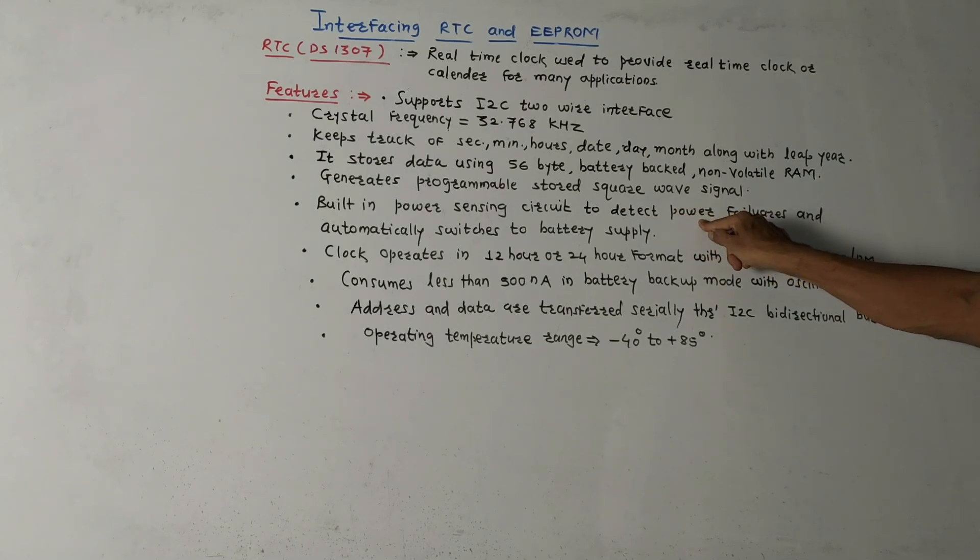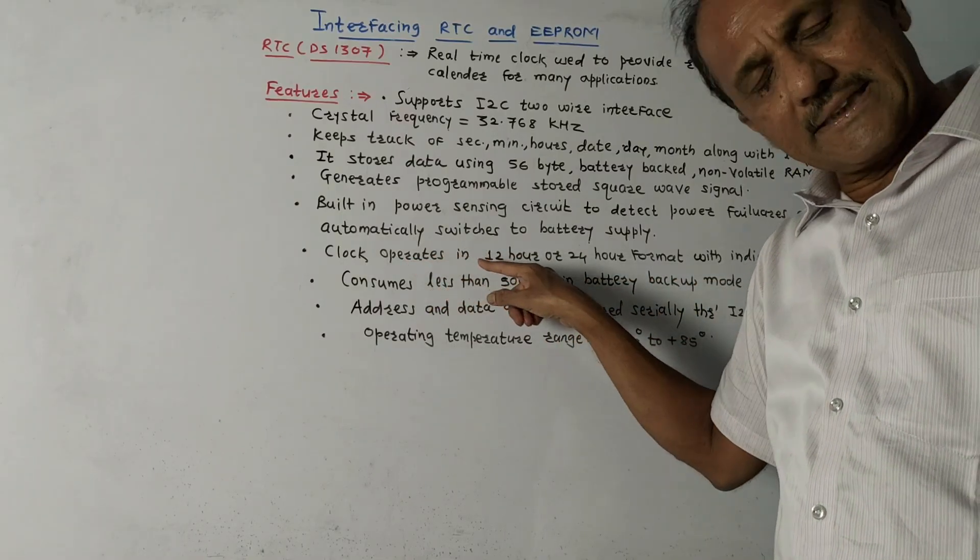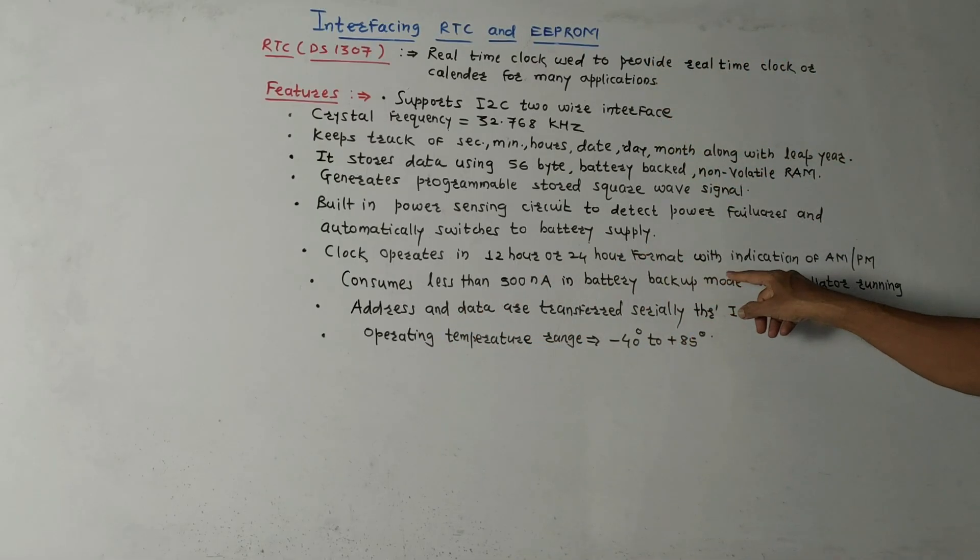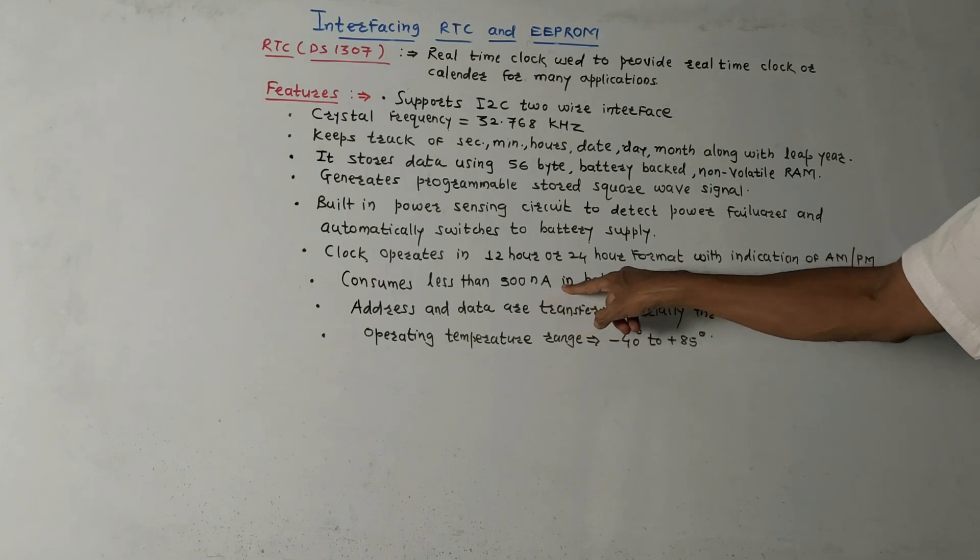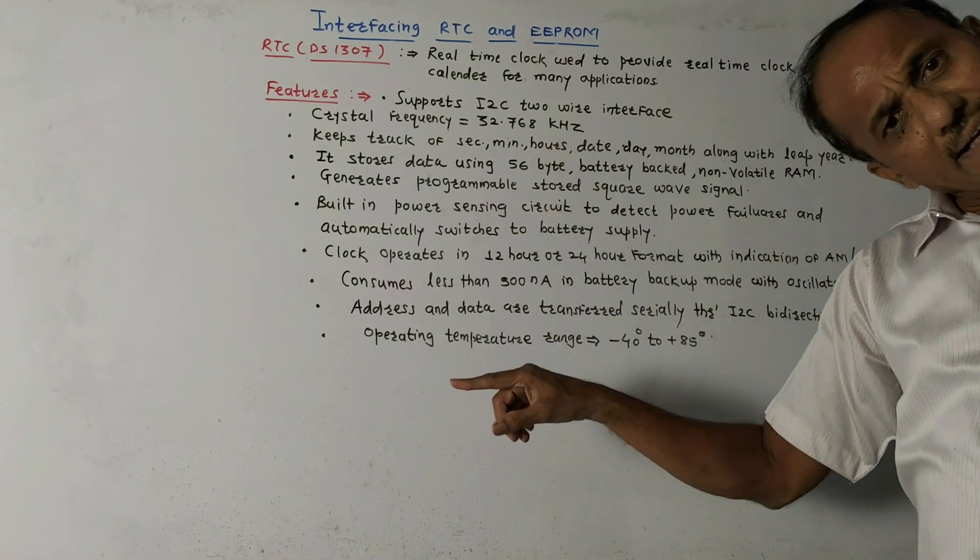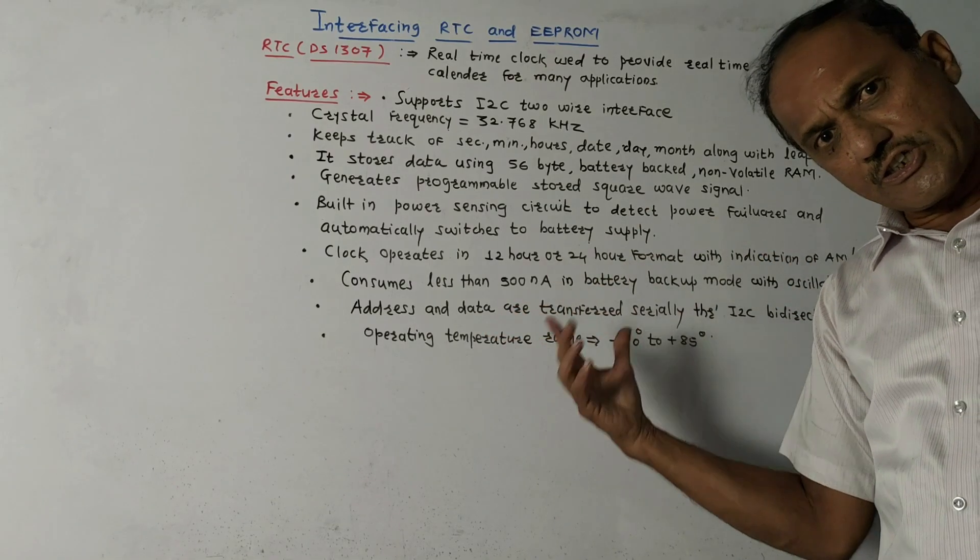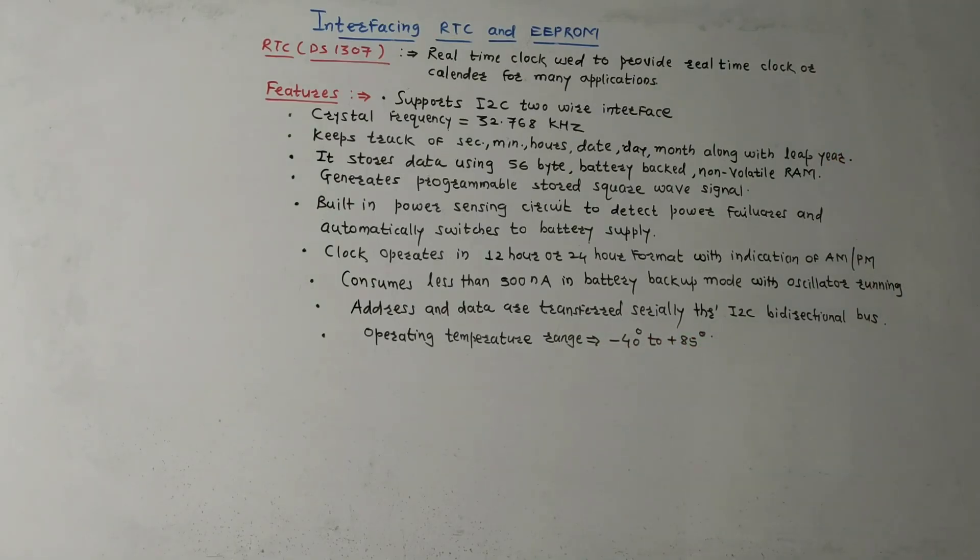It has built-in power sensing circuit that automatically detects power failure and switches to battery backup. The clock operates in either 12-hour mode or 24-hour mode with AM/PM indication. It consumes less than 500 nanoamperes in battery backup mode. Address and data are transmitted serially through I2C bidirectional bus. Industrial operational temperature range is minus 40 degrees to plus 85 degrees.